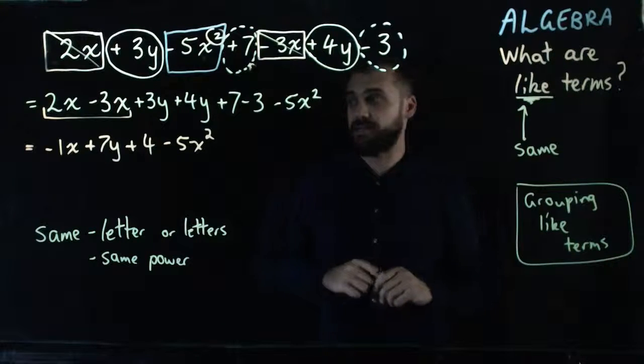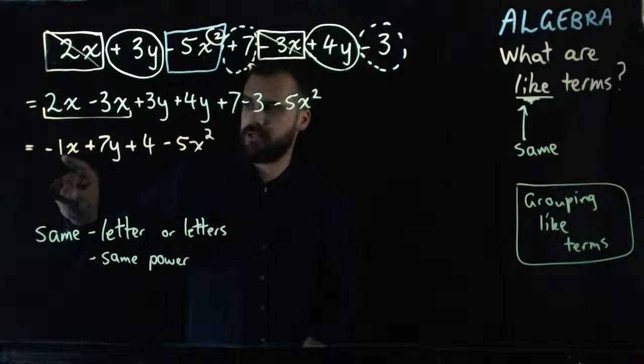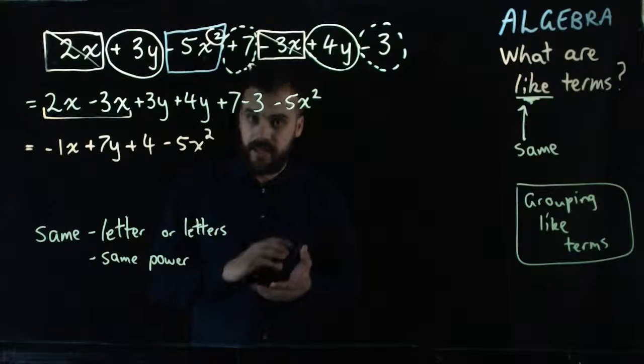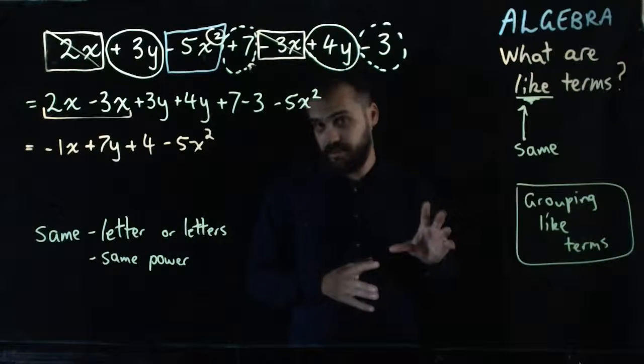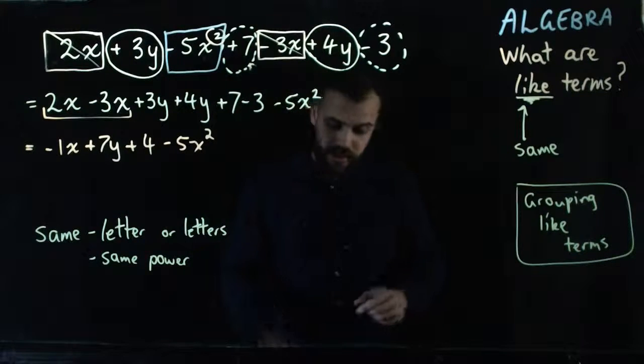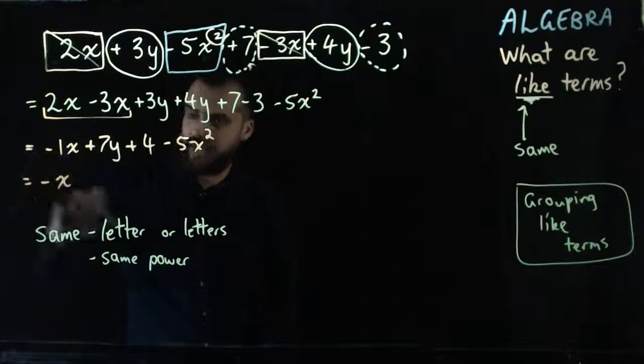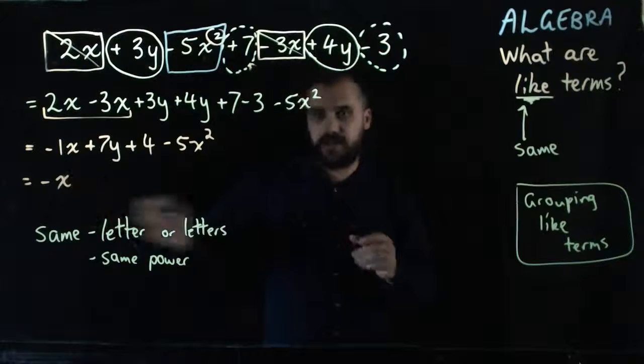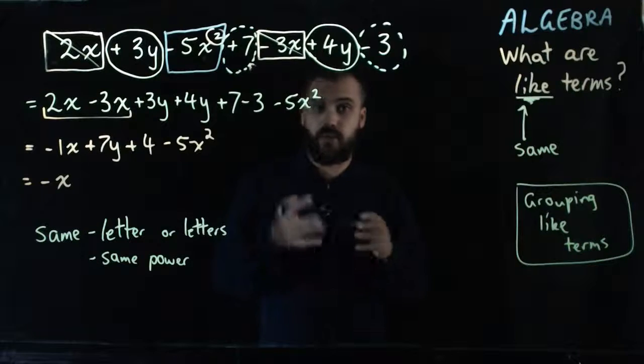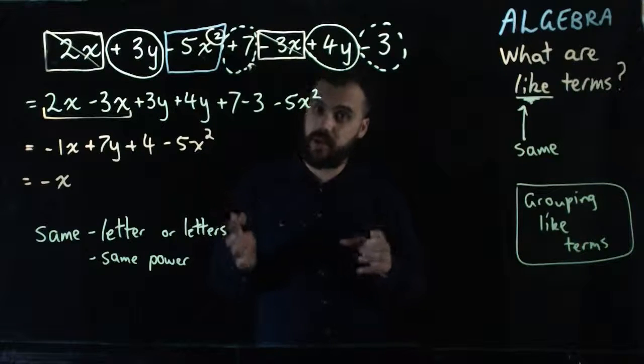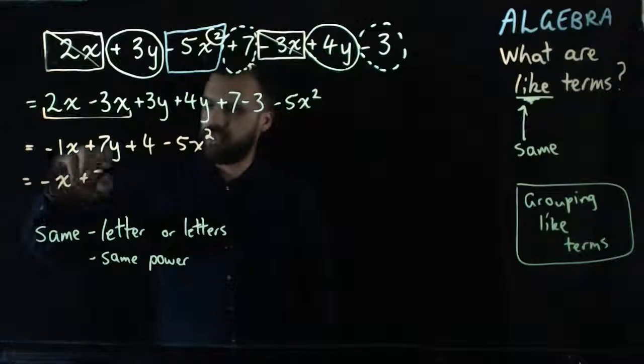Now, the last thing I wanted to say here was, technically, where I've written minus 1x, mathematicians are a little bit lazy. So, if you've only got 1 of something, you don't need to write the number 1. You can just write minus x. Minus x means the same as minus 1x. And x would mean the same as 1x. So, just keep that in mind. If you've only got 1 of something, you just need to write the letter. You don't need to write the number.